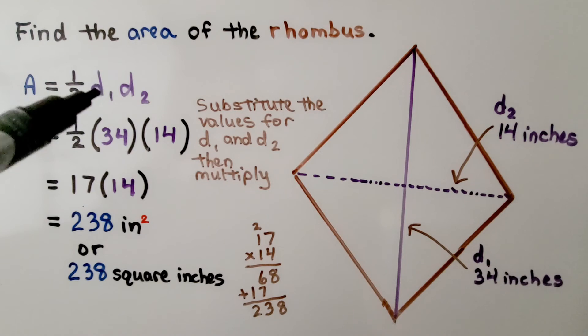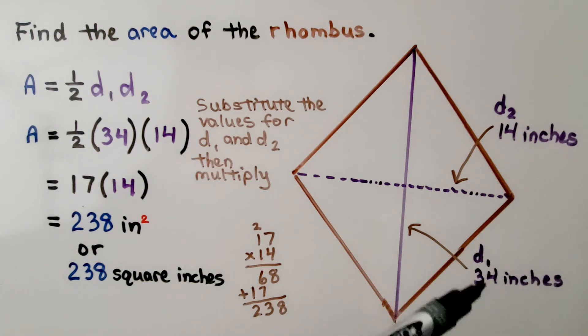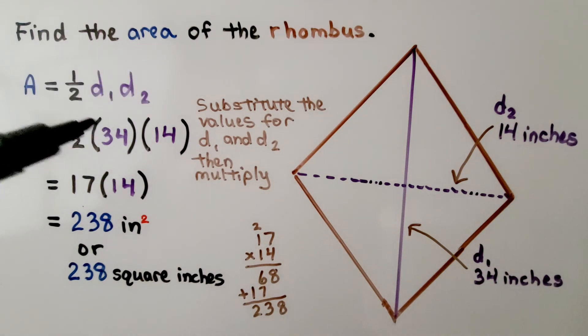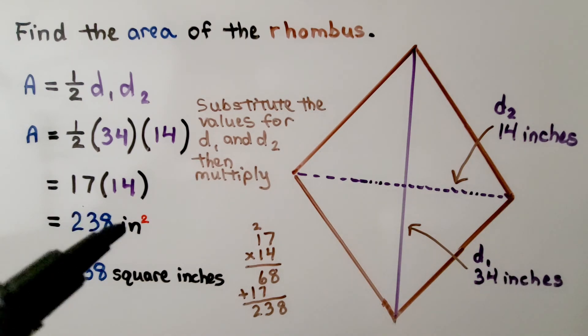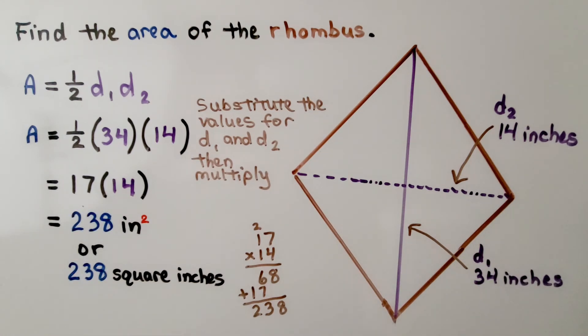We're going to substitute the values for d sub 1 and d sub 2 and then multiply. So we have 34 and 14. Half of 34 is 17. Now we do 17 times 14, we get 238. We see it's in inches, so we have 238 square inches.